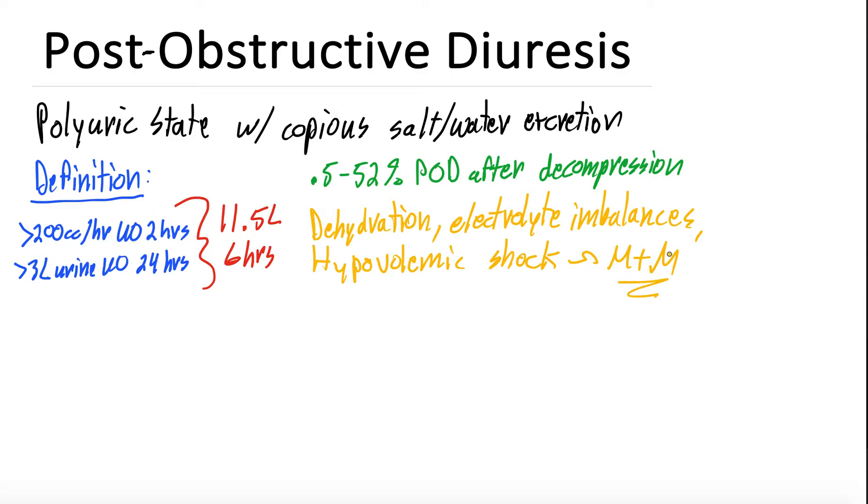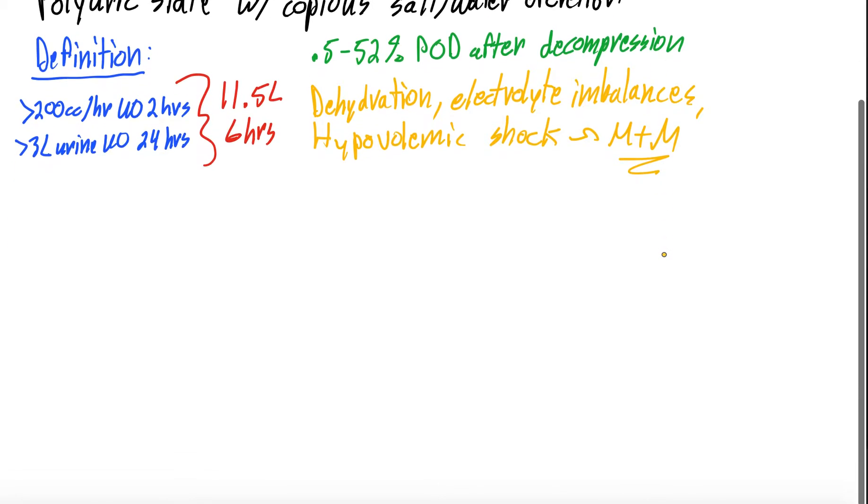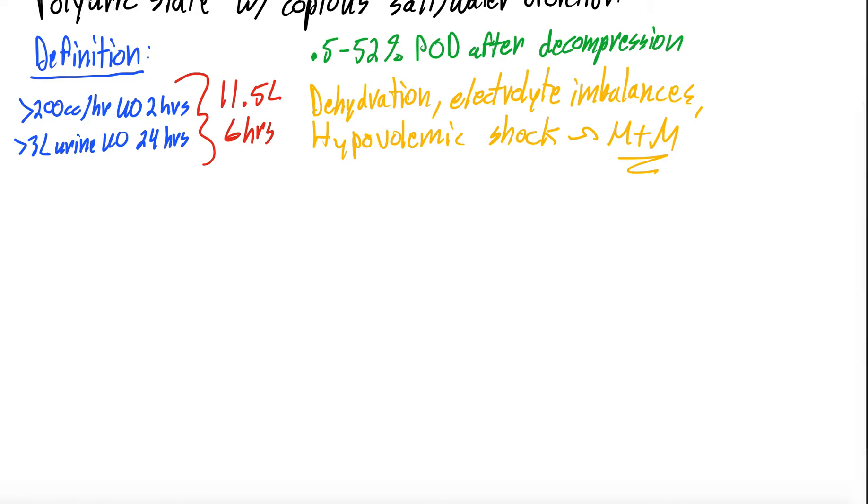Why do we develop post-obstructive diuresis? Well, for that I wasn't going to draw the nephron, but I'm too tempted now. Let's draw it. Hopefully, I can do this on the fly here in a reasonable amount of time. So we're going to draw a nephron.